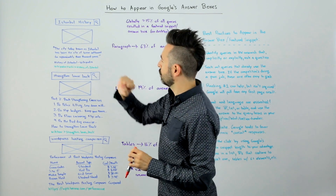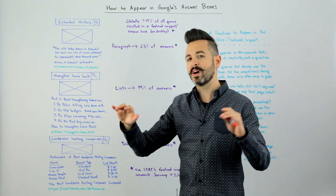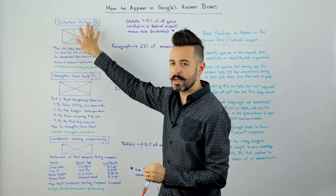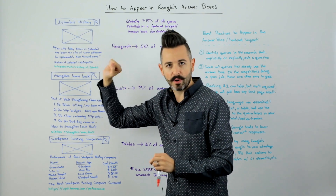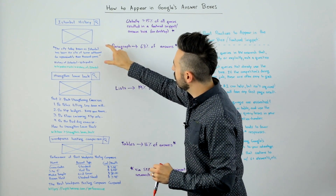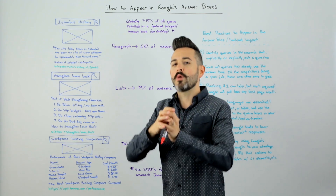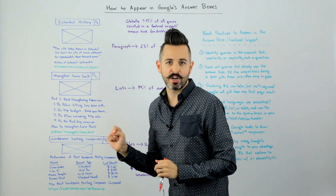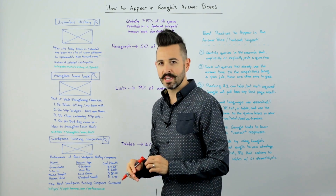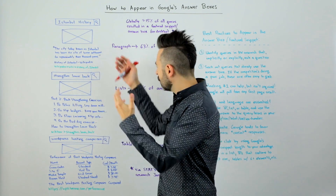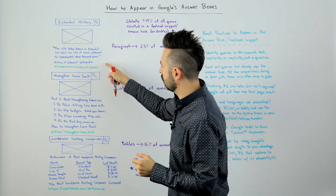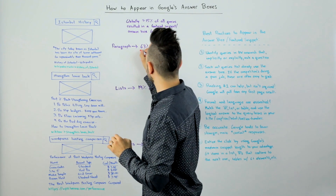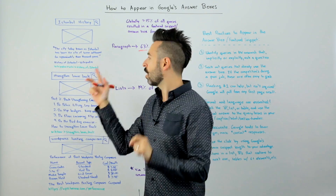I did a search here for 'Istanbul history,' and you can see that Wikipedia is not just ranking number one — they're also ranking number zero. They have this nice featured snippet with a photo or image, which appears on the right-hand side on desktop or on top of the text on mobile, and a snippet that essentially gives you a brief answer to the question. Paragraph answers make up about 63% of all the answer boxes.